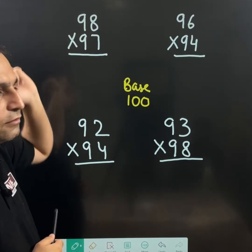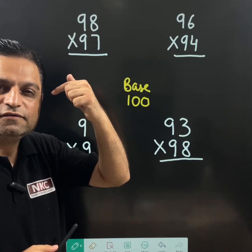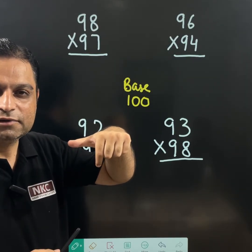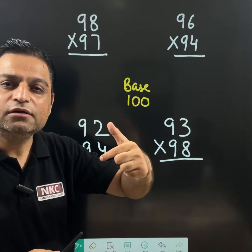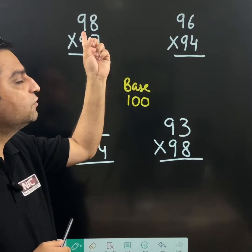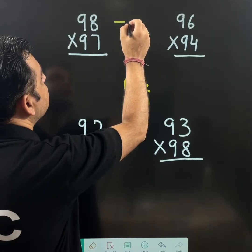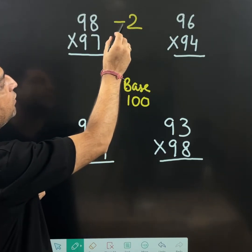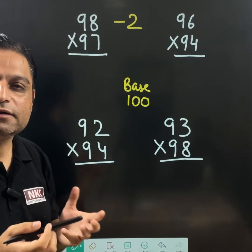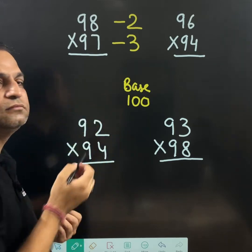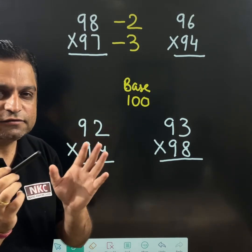Like 98, I am considering base 100 means 98 how much it is smaller than 100. What should I subtract from 100 so that I get 98? Very simple. I will subtract 2. 100 minus 2 gives me 98. 100 minus 3 gives me 97. This is very easy.